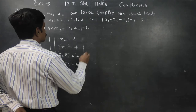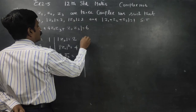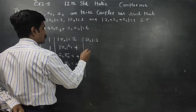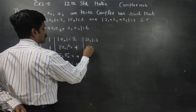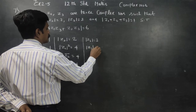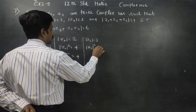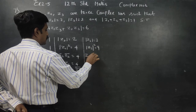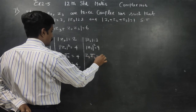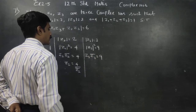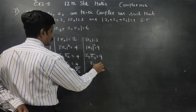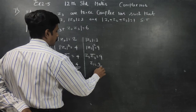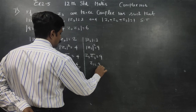Entering into the third result: modulus of z3 is equal to 3. Squaring both sides, modulus of z3 squared is equal to 9. This can be written as z3 into z3 conjugate is equal to 9. Therefore, z3 is equal to 9 by z3 conjugate.